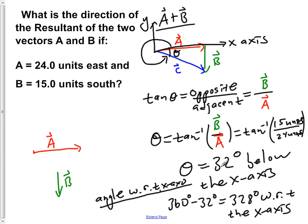So the answer would be theta is 32 degrees below the x-axis or 328 degrees with respect to the x-axis. This 32 degrees below the x-axis is the answer we're looking for. 328 degrees with respect to the x-axis would be another acceptable answer. But it's not necessary as long as you distinguish that it's 32 degrees below the x-axis.